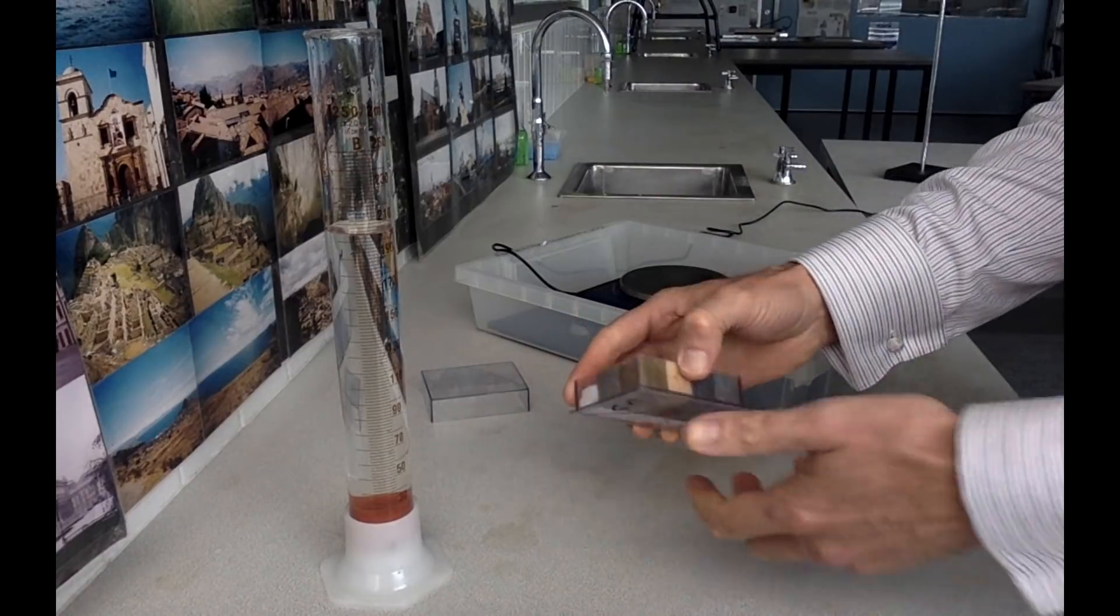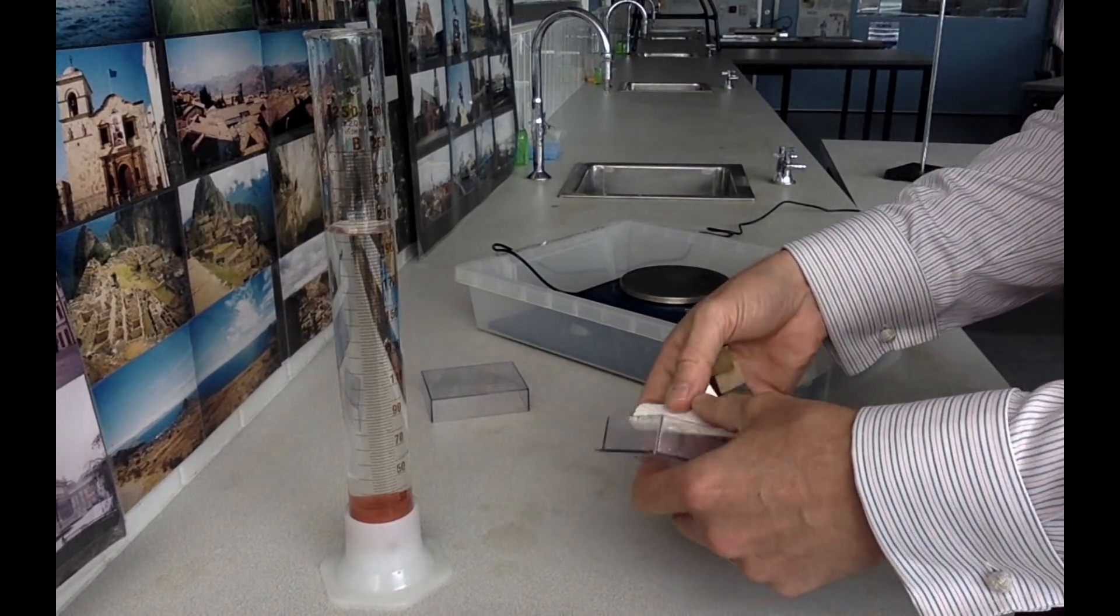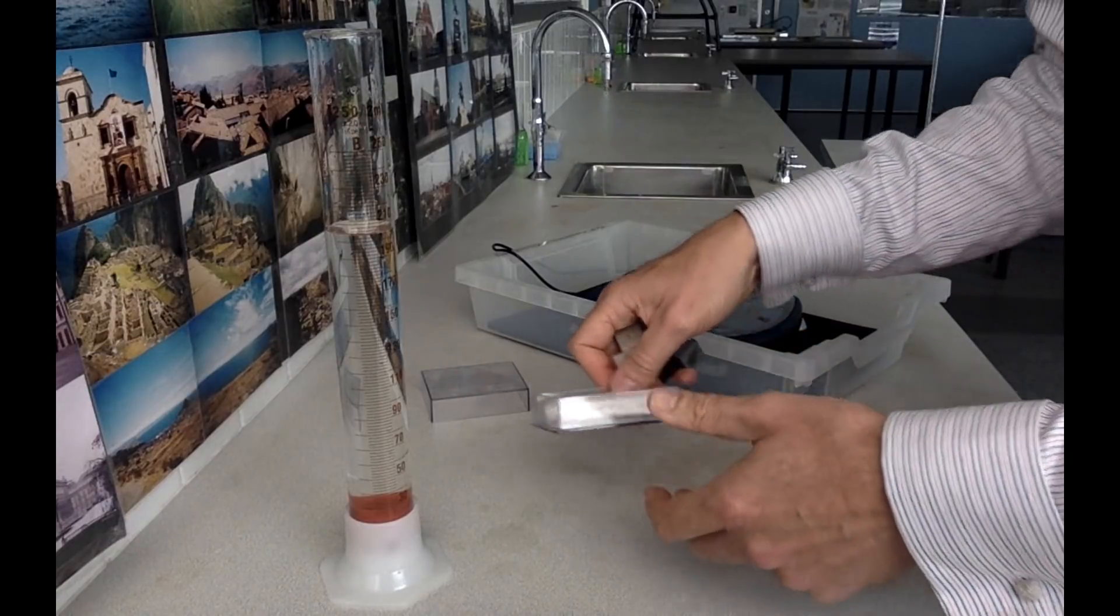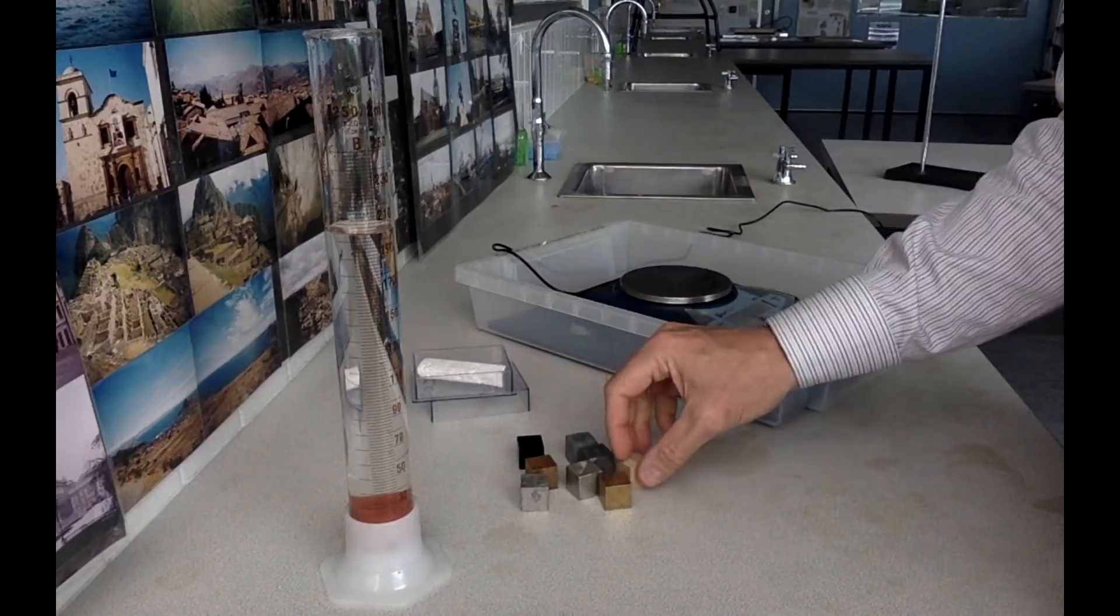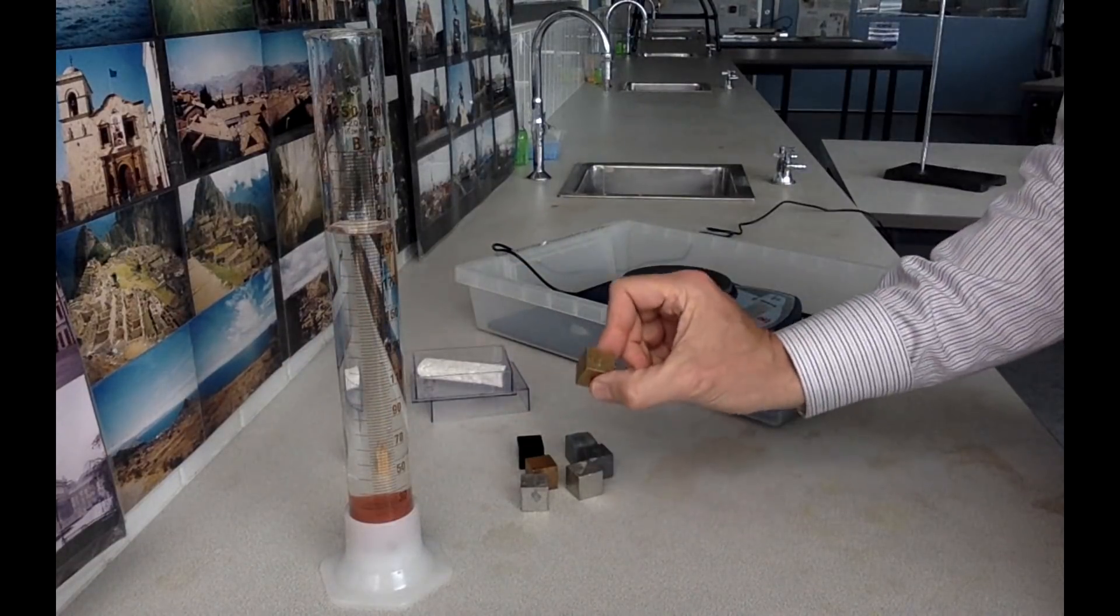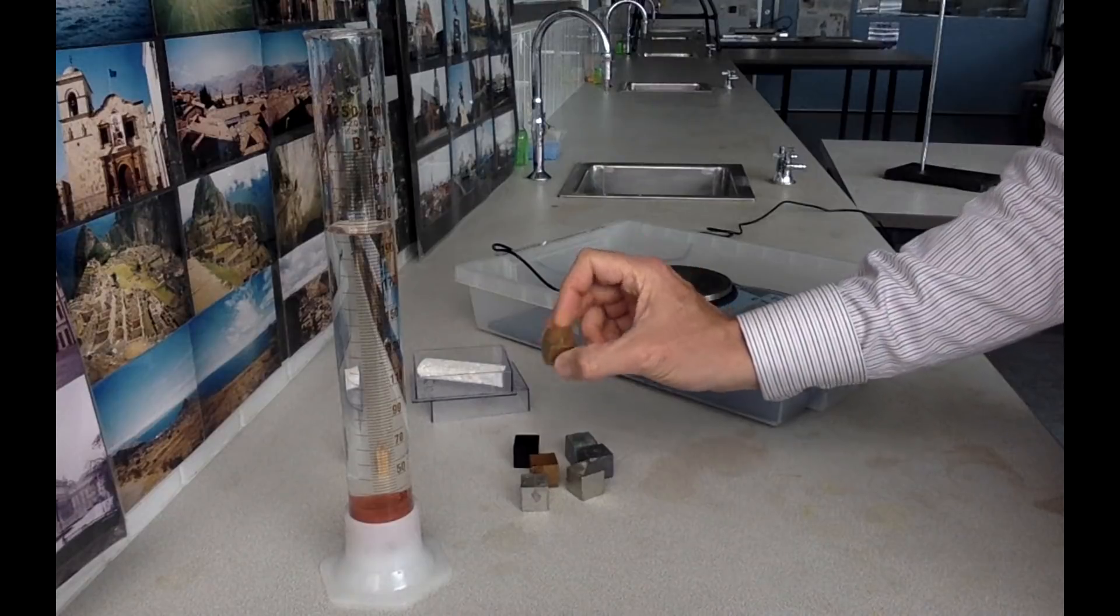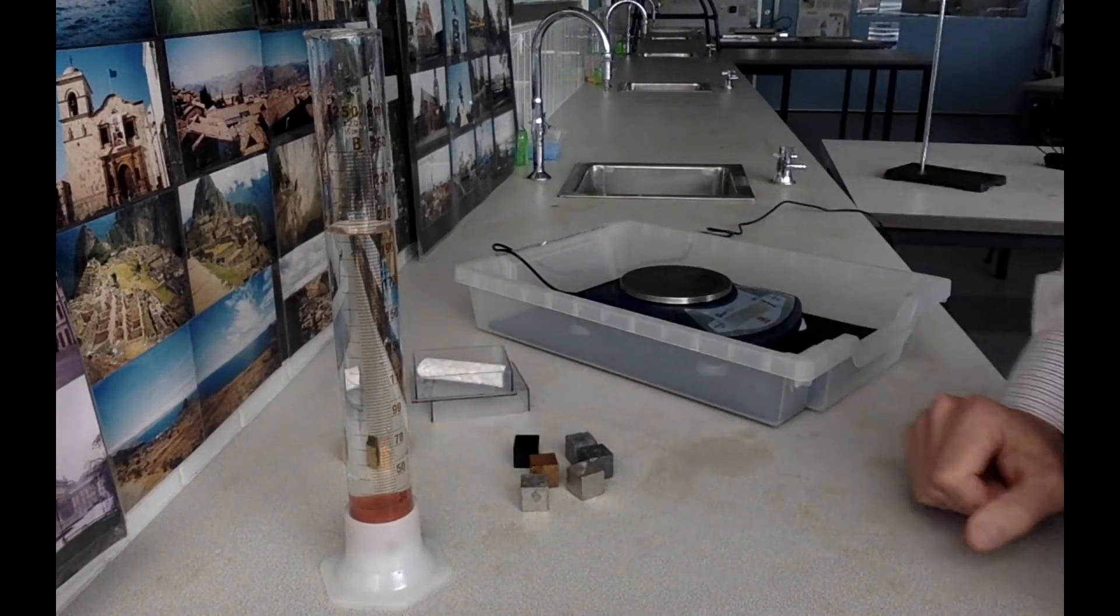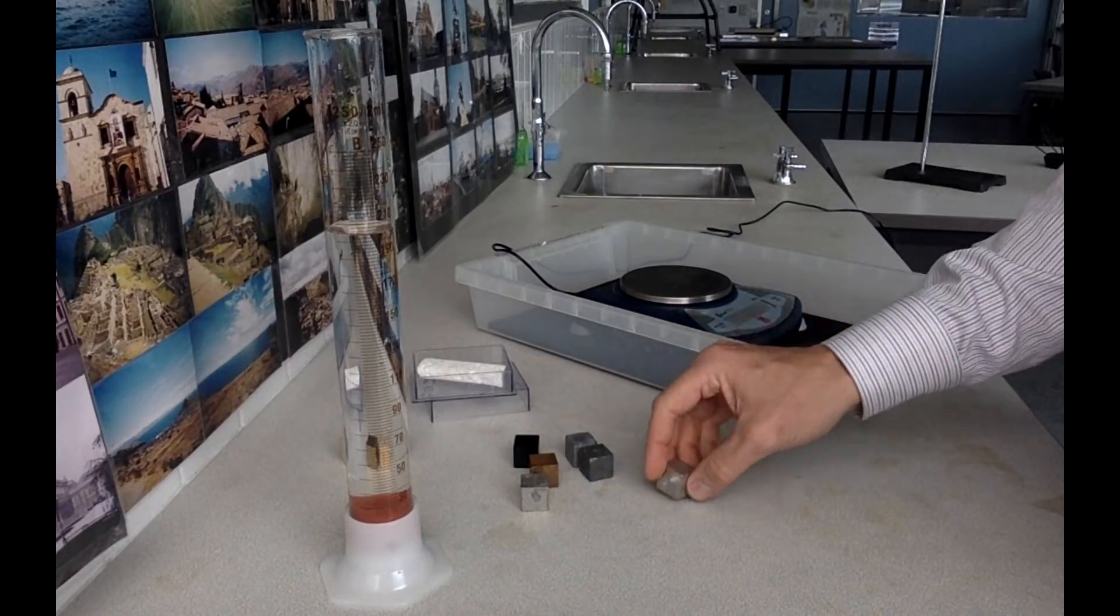Now we're going to choose one of the metals we want to measure the density of. There are six metals we're going to measure. There are eight in the tray, so you're going to take out the wooden one and the brass one, which are the two brownish metals. We're not measuring the density of wood and brass today. We're going to be left with six elements.